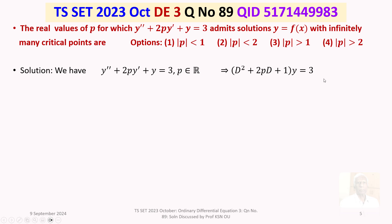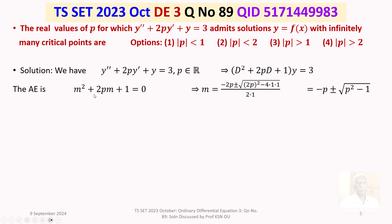To solve this, we write down its auxiliary equation, also called the characteristic equation: m² + 2pm + 1 = 0. Using the quadratic formula m = (−b ± √(b²−4ac)) / 2a, after simplification we get m = −p ± √(p²−1).